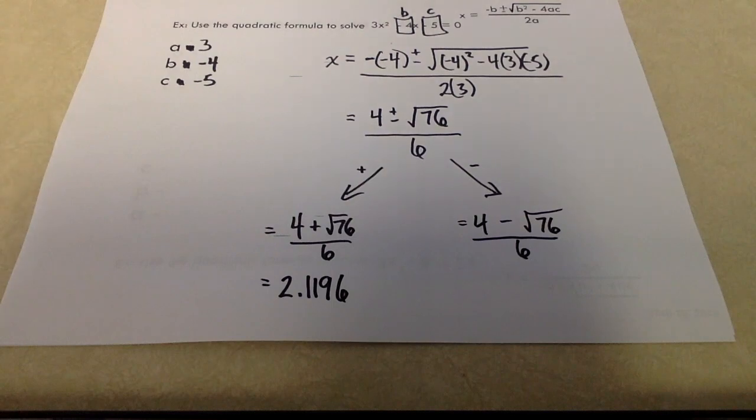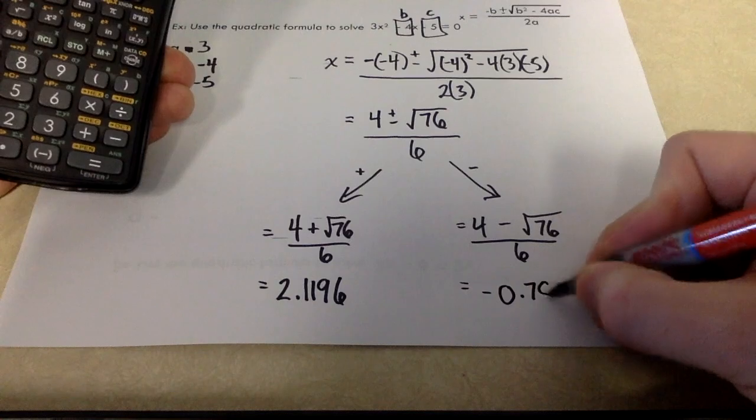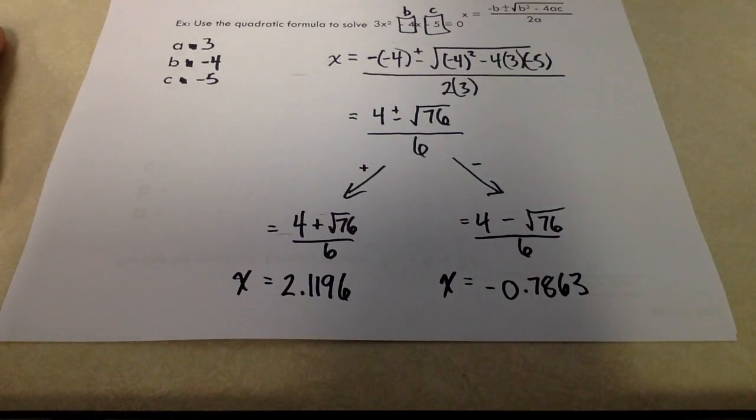Let's go over here. Same thing. You're going to grab your calculator. You're going to be very careful. And I get negative 0.7863. And that's all there is to it for that one.